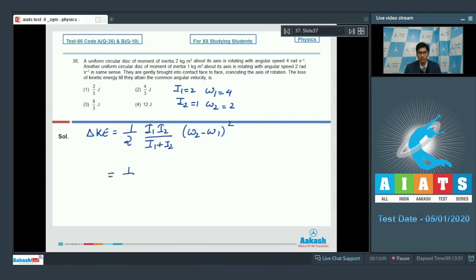On substituting the values we can write loss in kinetic energy is equal to half into 2 into 1 by 2 plus 1, 4 minus 2 square that is 4 by 3 joules and therefore the correct answer is option number 2.